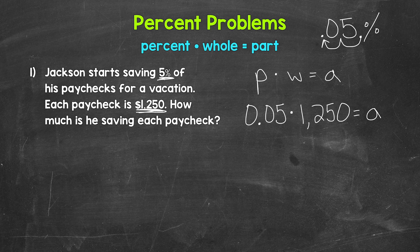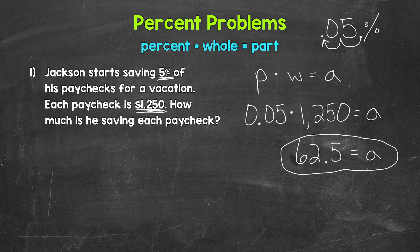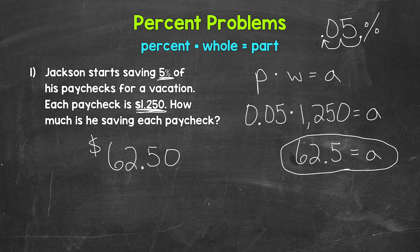We have five hundredths times $1,250, which gives us 62.5. That's the part. Now going back to the original question — how much is he saving each paycheck? When we write out money involving cents, we write it to the hundredths place, so this is $62.50. That's how much he saves each paycheck.